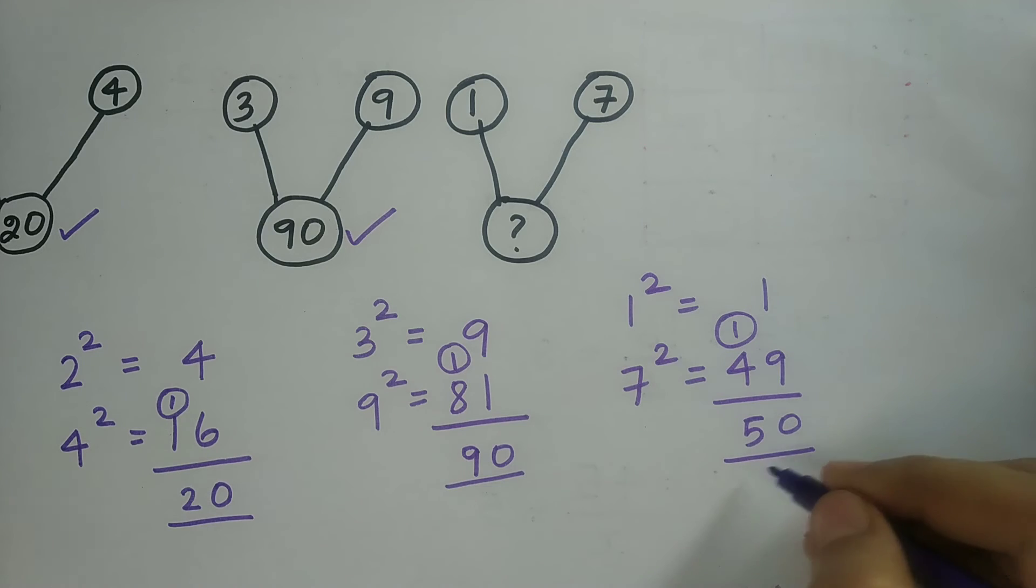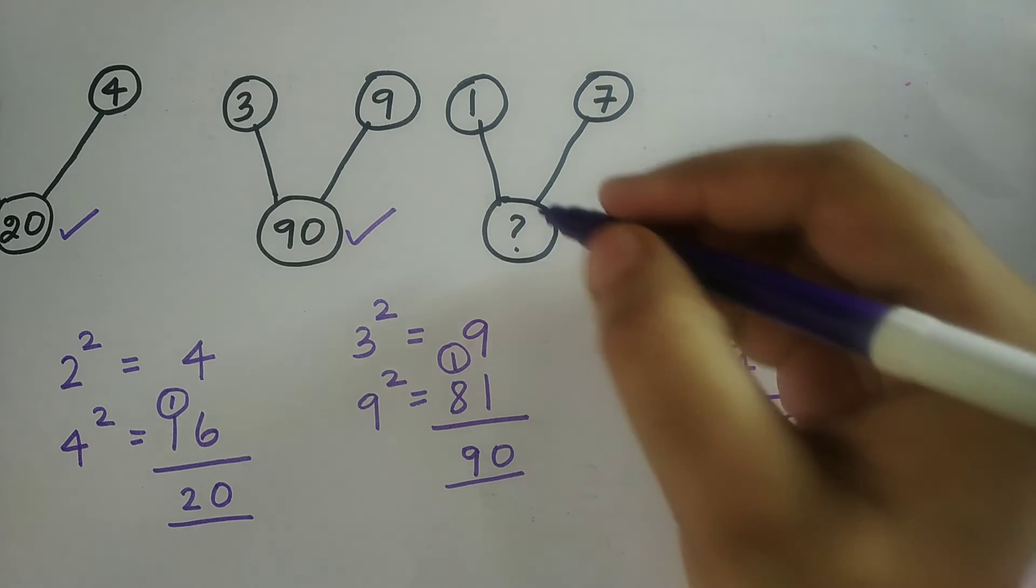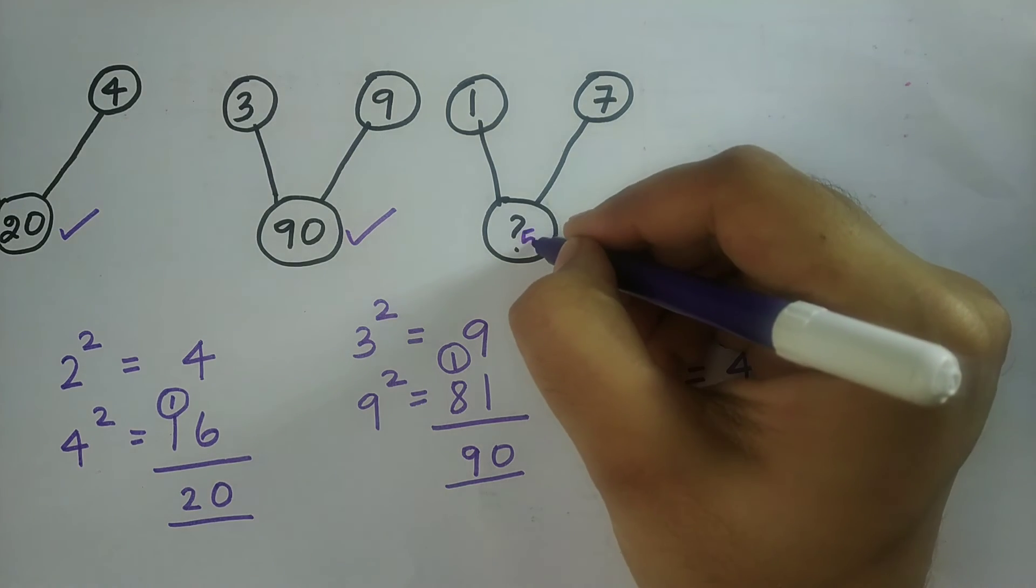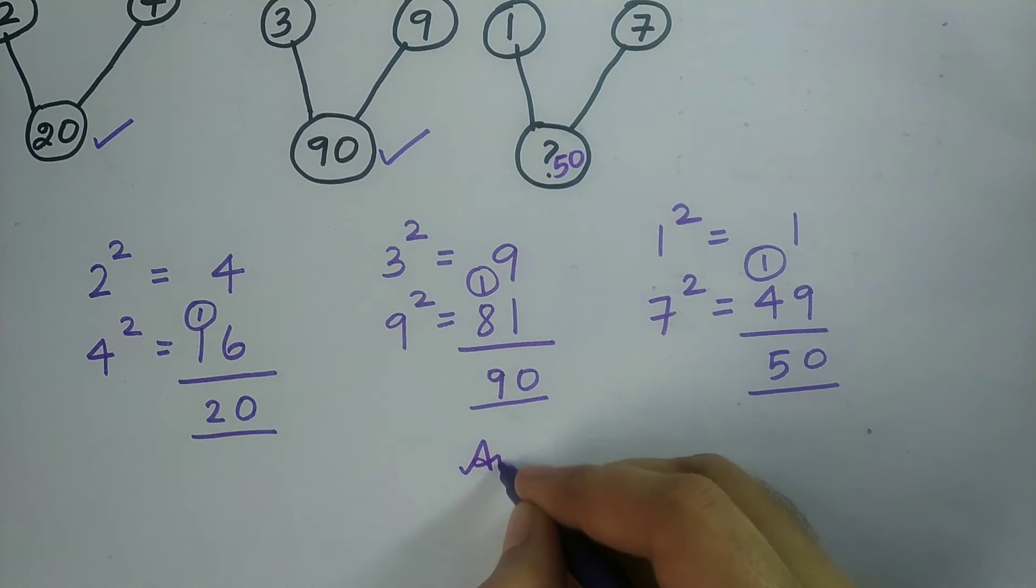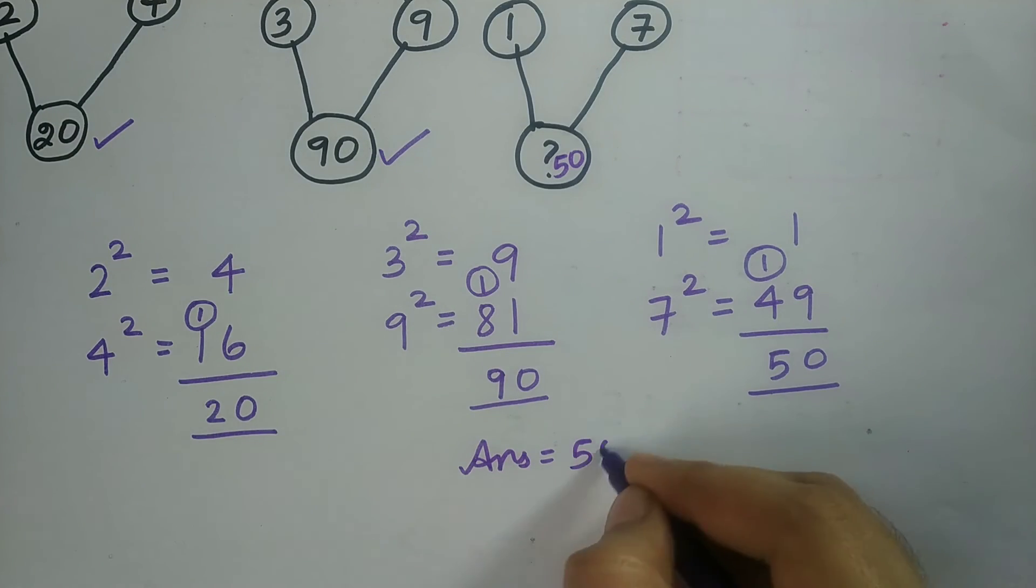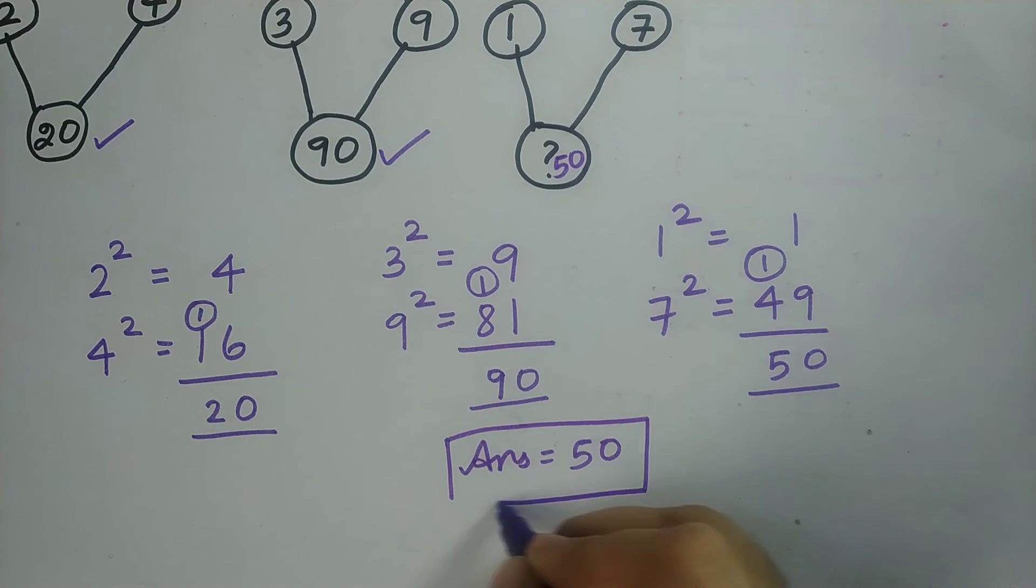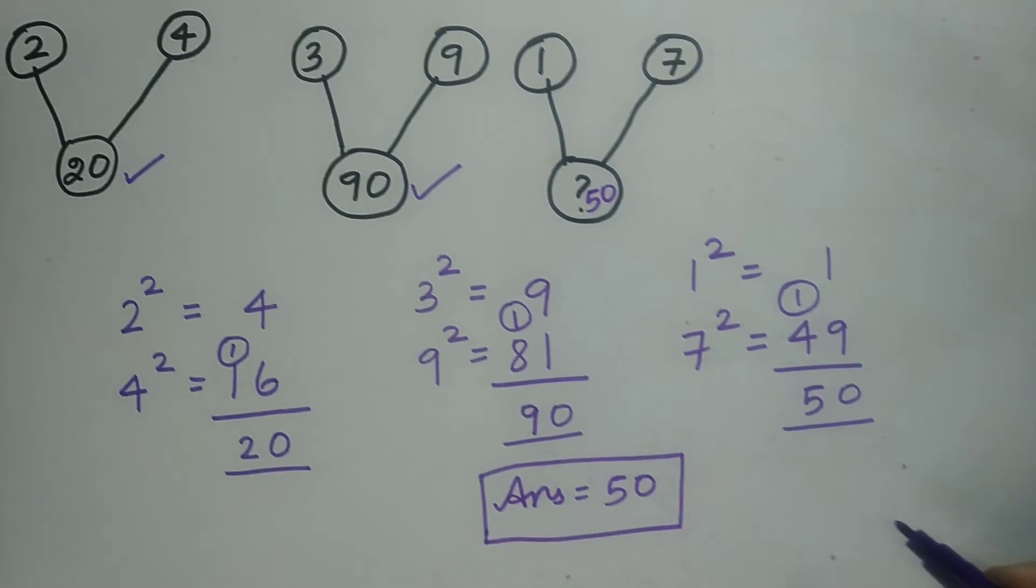Which is equal to 50. I should add these two. So I will get 50. So therefore, in the place of question mark, I should write 50. The answer is 50. So this is the logic for this sum.